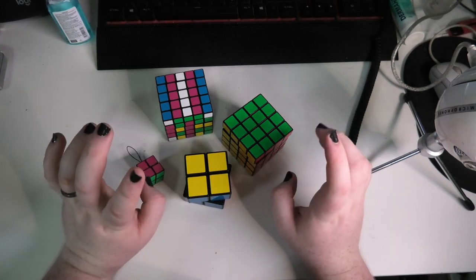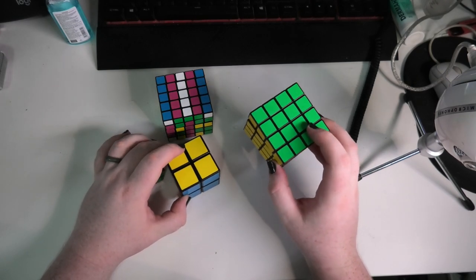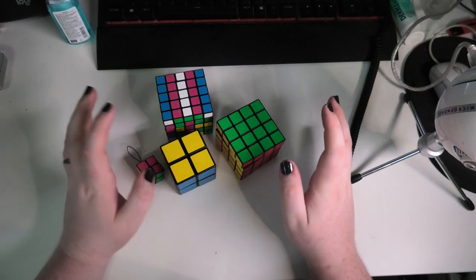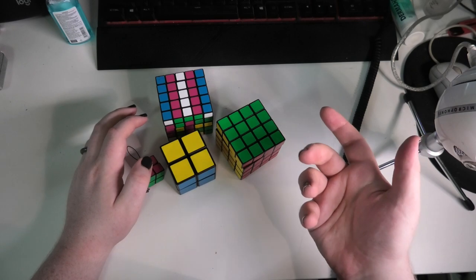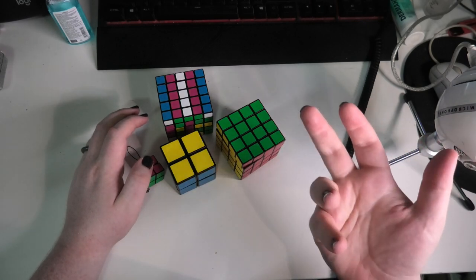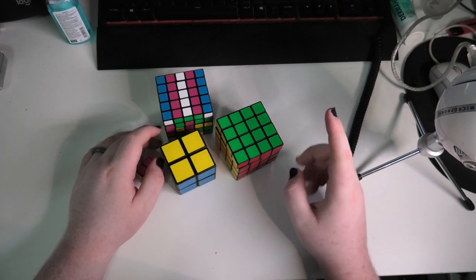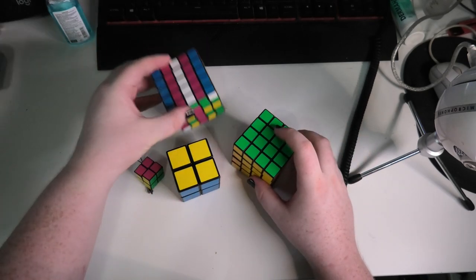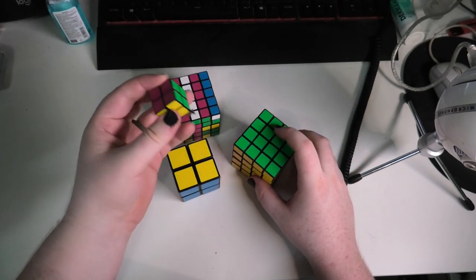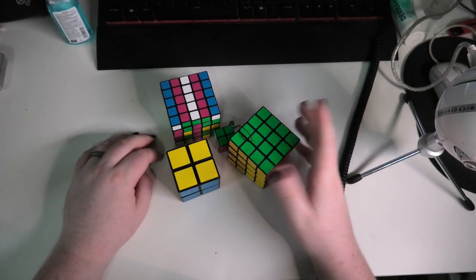So anyway, one thing that you may have noticed is that they never actually made a 3x3. That's a big thing that Eastsheen was sort of known for - maybe that was just me. But they never once made a 3x3 cube. You just couldn't get an Eastsheen 3x3. They made 2x2s, 4x4s, 5x5s, and weird little keychain 2x2s, often multiple ones. And that was it. You couldn't get a 3x3 Eastsheen.